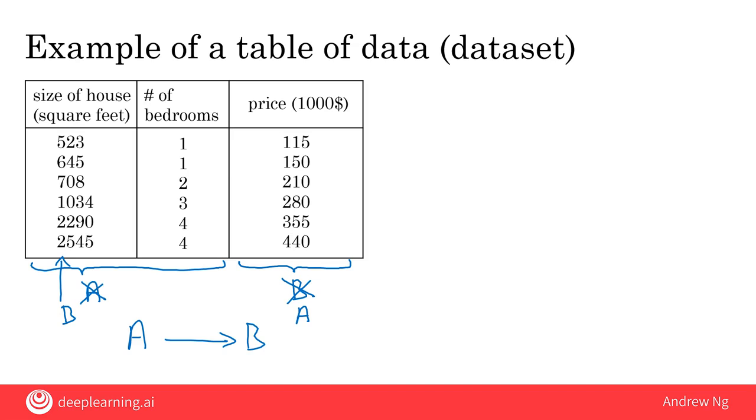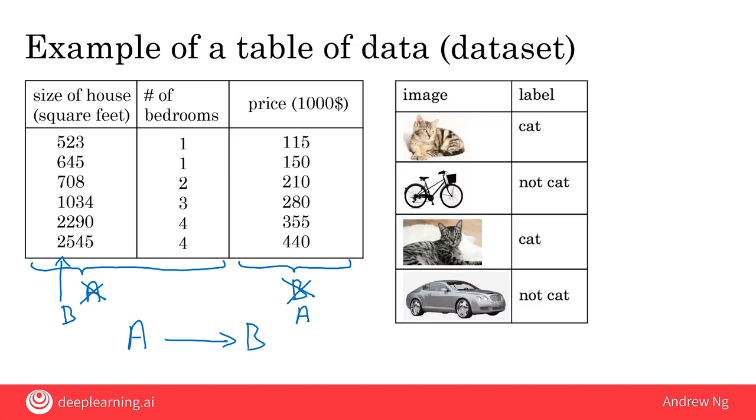Here's another example of a dataset. Let's say you want to build an AI system to recognize cats in pictures. Maybe for a fun mobile app, and you want to tag all the pictures of cats. You might collect a dataset where the input A is a set of different images and the output B are labels.